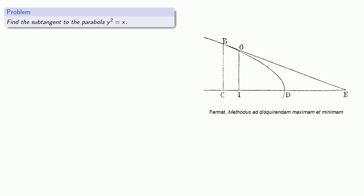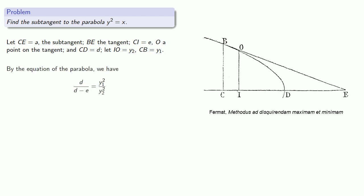So Fermat proceeds as follows. Let CE equal a, the sub-tangent, BE the actual tangent line, CI equal to e, O a point on the tangent, and CD equal d. Let IO equal y2 and CB equal y1. By the equation of the parabola, we have d is to d minus e as y1 squared is to y2 squared.